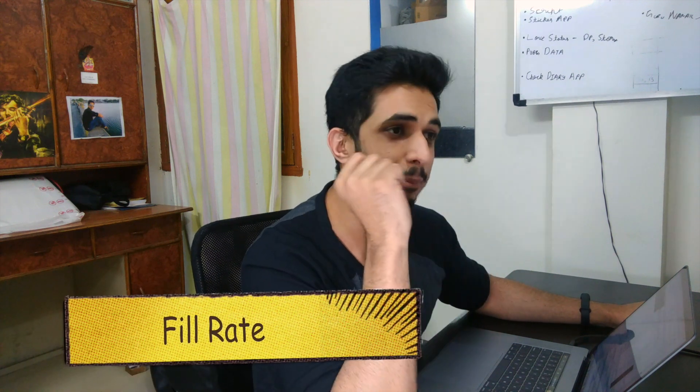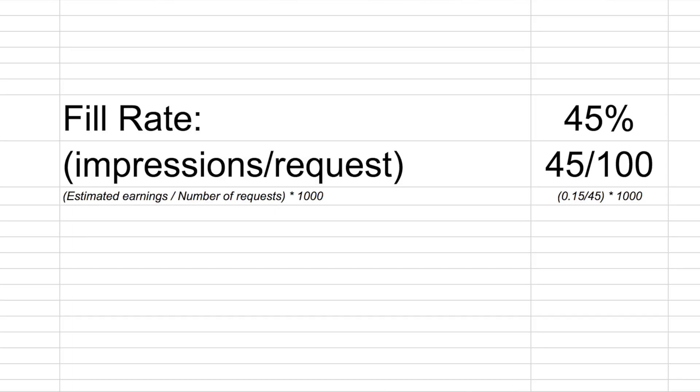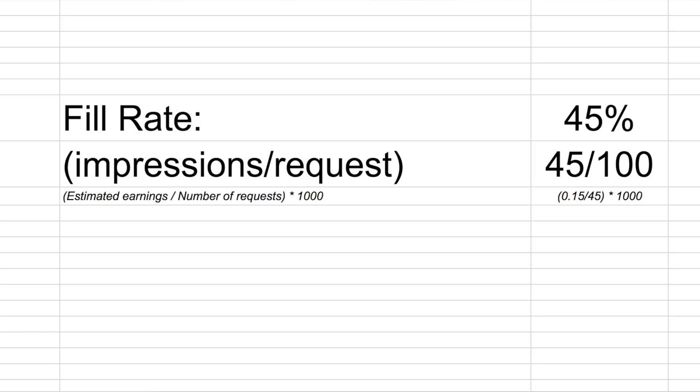One more important term is fill rate. Fill rate is the percentage of how many impressions are shown compared to total requests in your app. The formula is impressions divided by requests. So if we have 100 requests and 45 impressions, our fill rate is 45%.